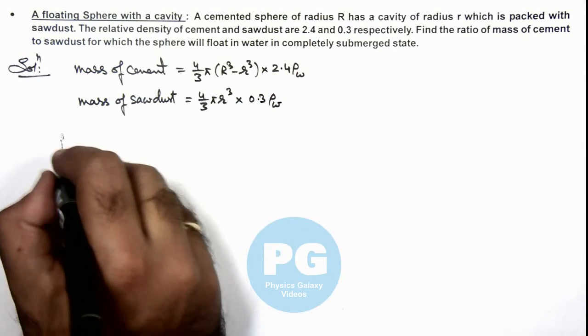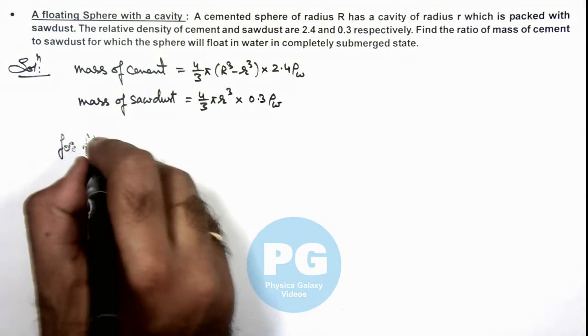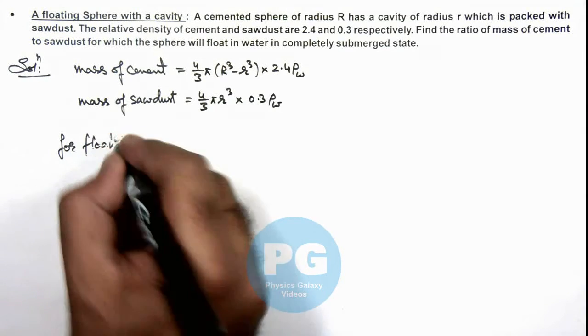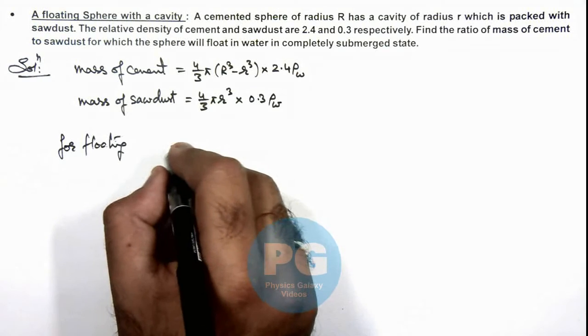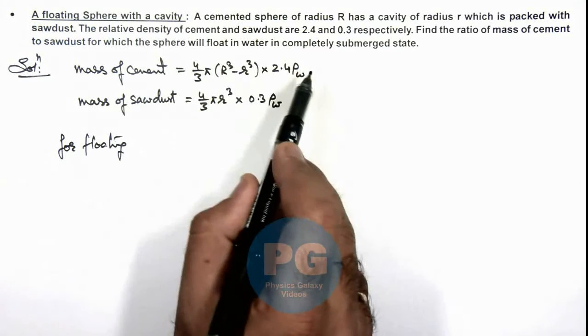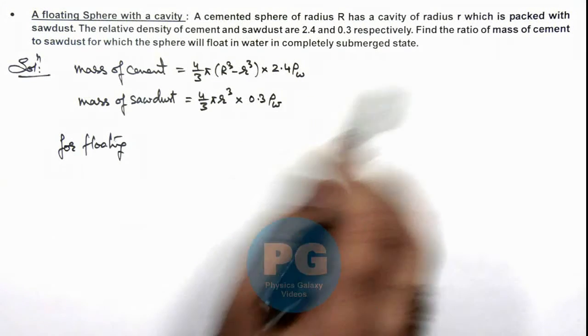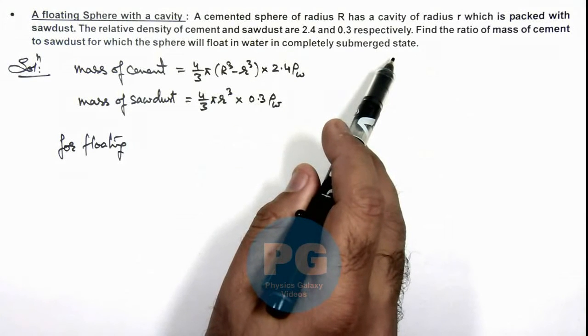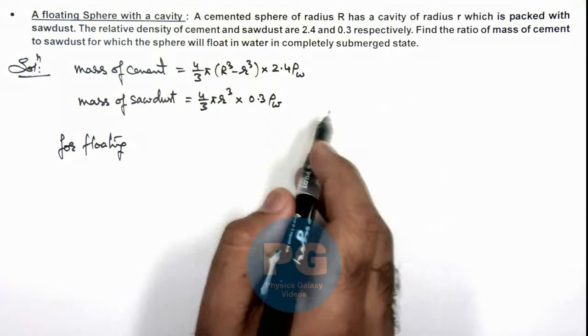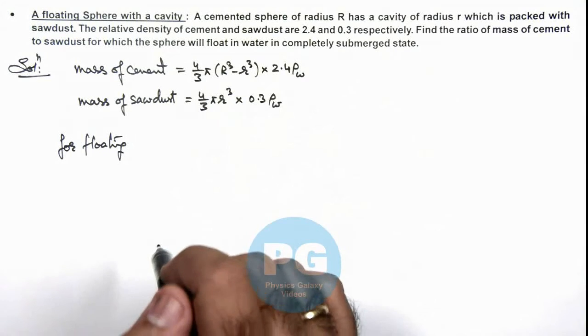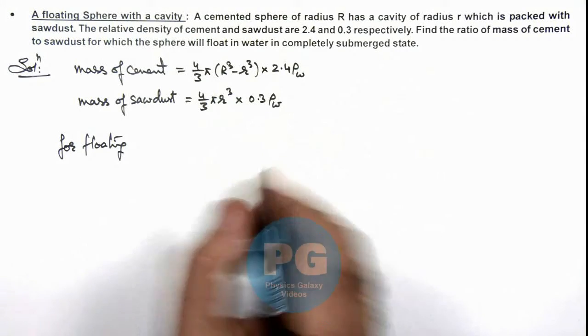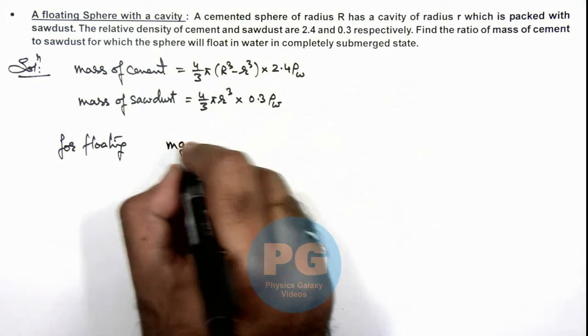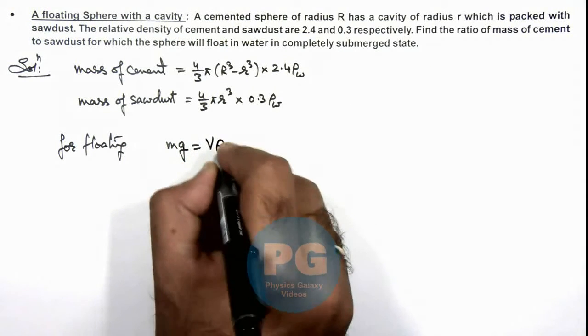And we know for floating, we can write the weight of water displaced by the whole sphere, as we are given that it is in completely submerged state, that would be balancing the total weight of the sphere. So here we can write the sphere weight mg will be balancing V ρ water g.